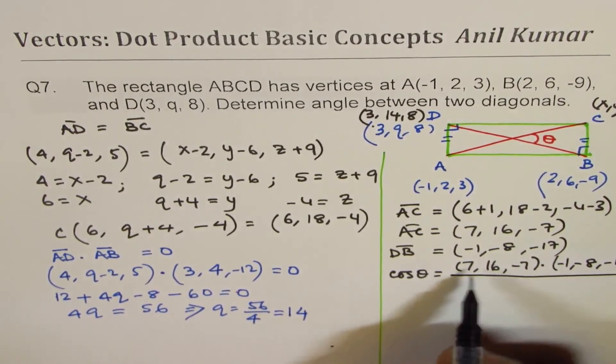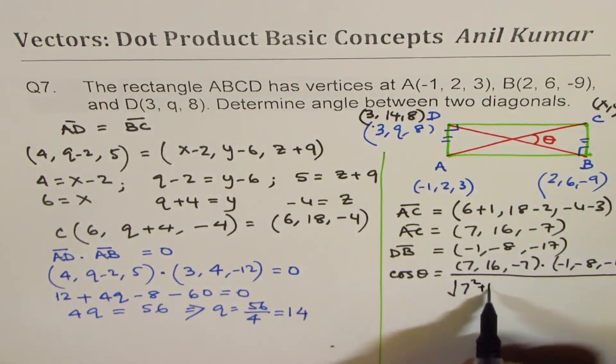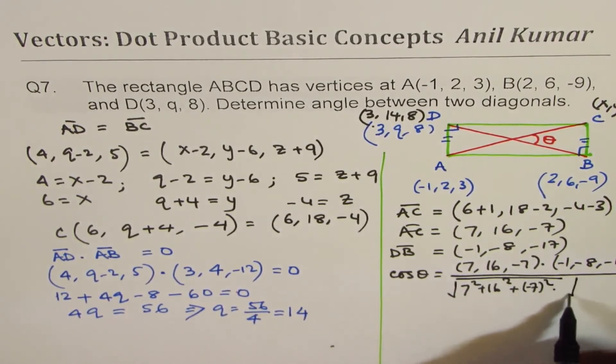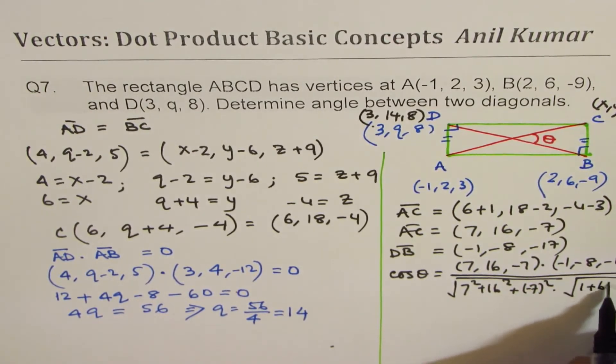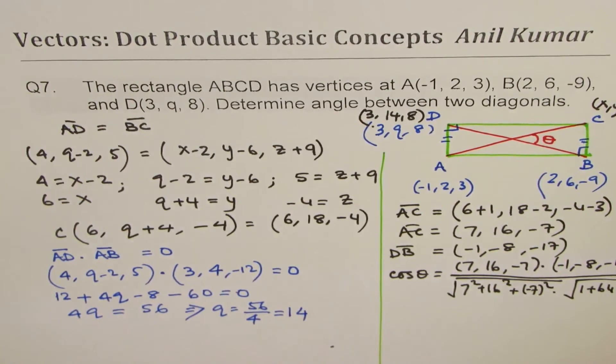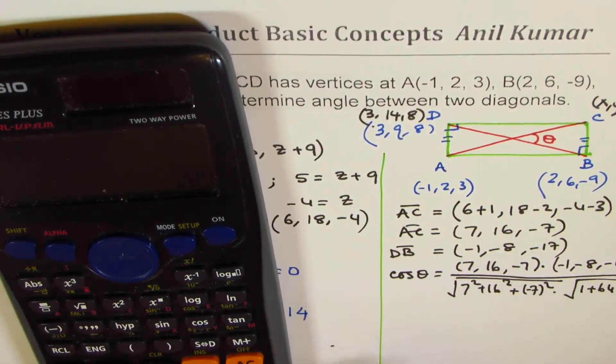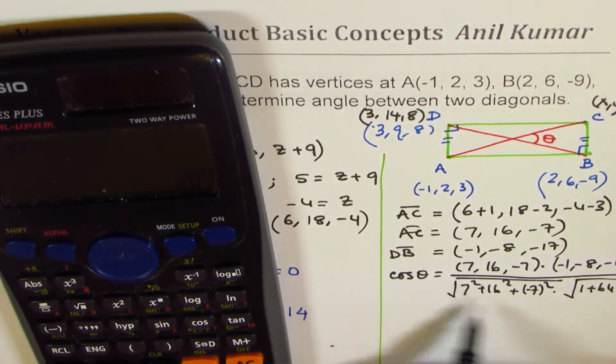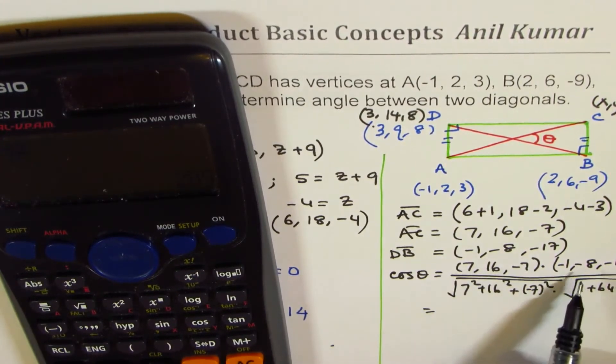divided by the magnitude of these, which is √(7² + 16² + 7²) times √(1² + 8² + 17²) = √354 × √354. So let's do the dot product now.